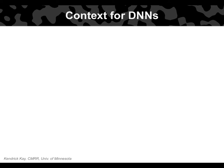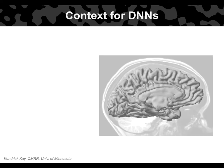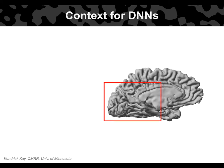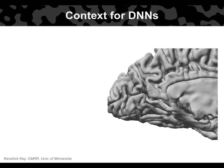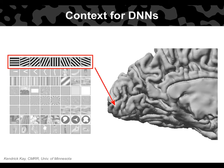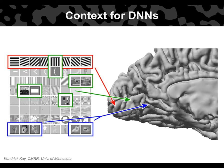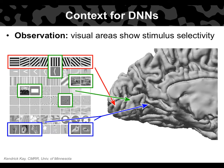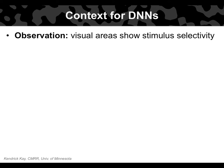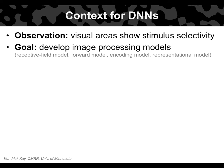Let's start with the big picture. We're studying the visual system. We go in and measure responses to stimuli and see what stimuli drive responses in different visual areas. The basic observation is that different visual areas show different stimulus selectivity, implying that different areas are performing different types of visual processing. The goal is to develop quantitative models of that processing.